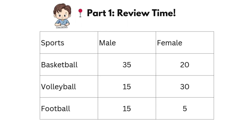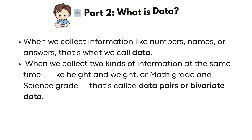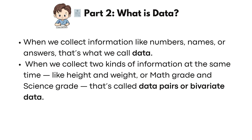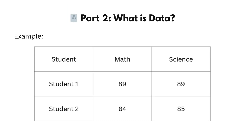Let's start with something familiar. Look at this table. How many female students love playing volleyball? Yes — 30 female students. How many male students love football? Correct — 15 students. These numbers are data, collected information that we can show in a chart or a graph. When we collect two kinds of information at the same time, like height and weight, or math grade and science grade, that's called data pairs or bivariate data. Each student here has two pieces of data — one for math and one for science. That's a data pair.